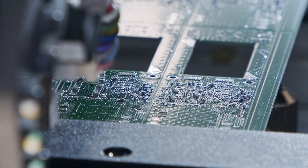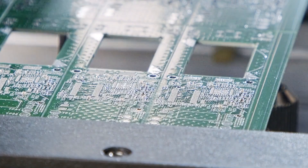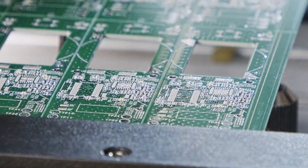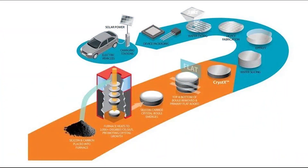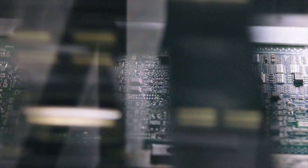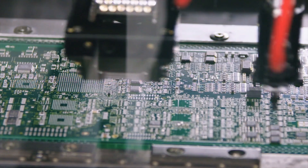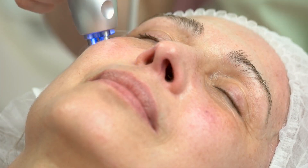While both SiC and GaN have similar properties, they are used in different types of applications. SiC is mainly used in power electronics, such as high voltage power supplies and motor drives, while GaN is used in high frequency and high power applications, such as power amplifiers and RF devices.